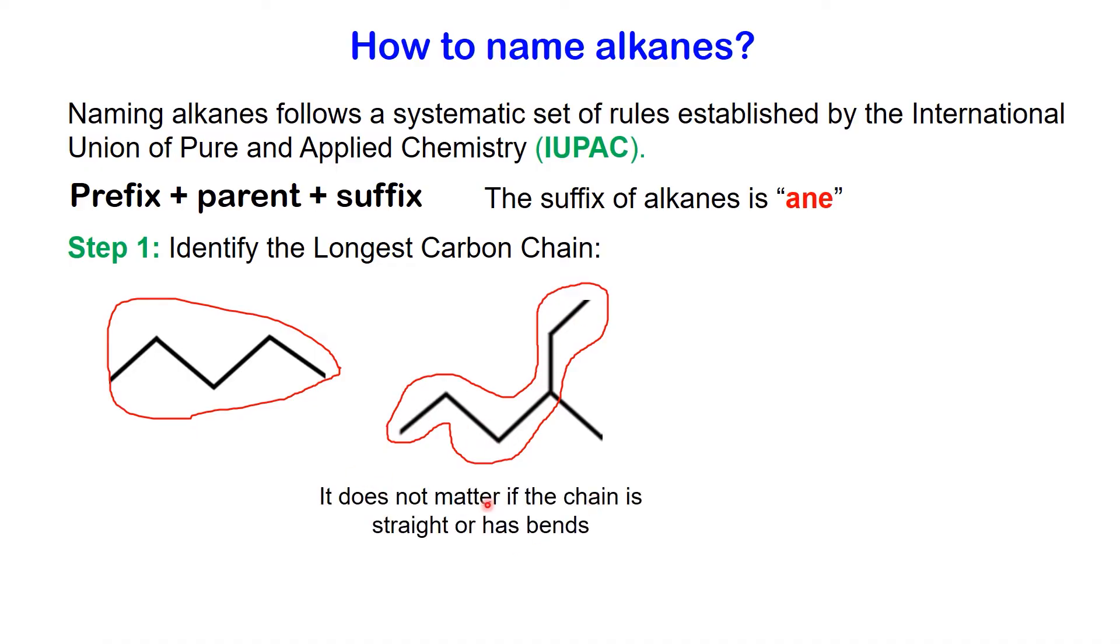When locating the main chain, it does not matter if the chain is straight or has bends. For this molecule we encounter two chains of equal length, but one is correct while the other is not. How do we choose between them?